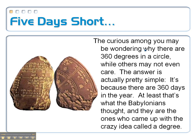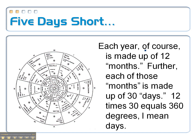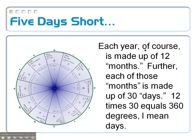So you might also be wondering, why 360 degrees? The answer is pretty simple — it's because there are 360 days in the year. Well, at least that's what the Babylonians thought, and it's them that we have to thank for this whole concept of a degree. Each year is made up of 12 months, each of those months is made up of 30 days, and 12 times 30 gives us our 360 degrees.